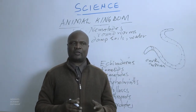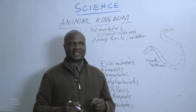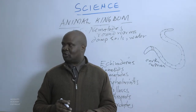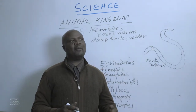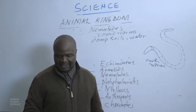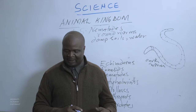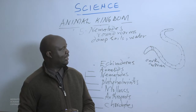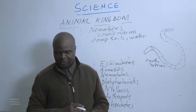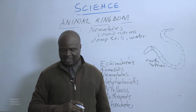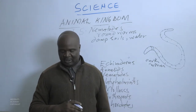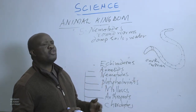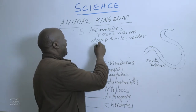Nematodes or round worms are parasitic organisms — they live on other organisms called the host. They get food from the host but in return the host gets nothing, and can even be harmed or killed. Nematodes are known to be found in the hearts of some animals.